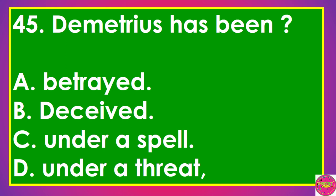Question 45: Demetrius has been: A. Betrayed, B. Deceived, C. Under a spell, D. Under a threat. The correct answer to this question is C. Under a spell.